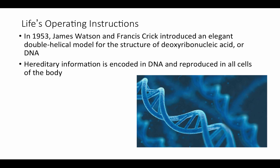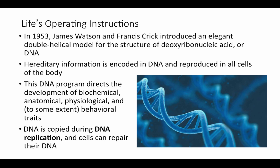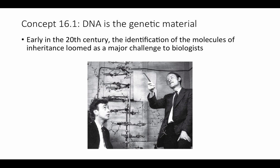This DNA program directs the development of biochemical, anatomical, physiological, and even to some extent behavioral traits. This is the link between genotype — the particular sequence of DNA you possess — and phenotype — all of the outward expressions of those genes. DNA is copied during DNA replication, which happens during the S phase of the cell cycle. Cells also have machinery in place to repair their DNA when mistakes in replication happen.